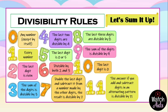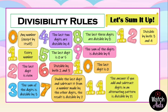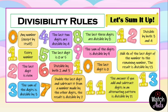For divisibility by eleven, the answer is divisible by eleven if you add and subtract digits in an alternating pattern. To check divisibility by twelve, it should be divisible by both three and four. For divisibility by thirteen, we add four times the last digit of the number to the remaining number, and the result should be divisible by thirteen.